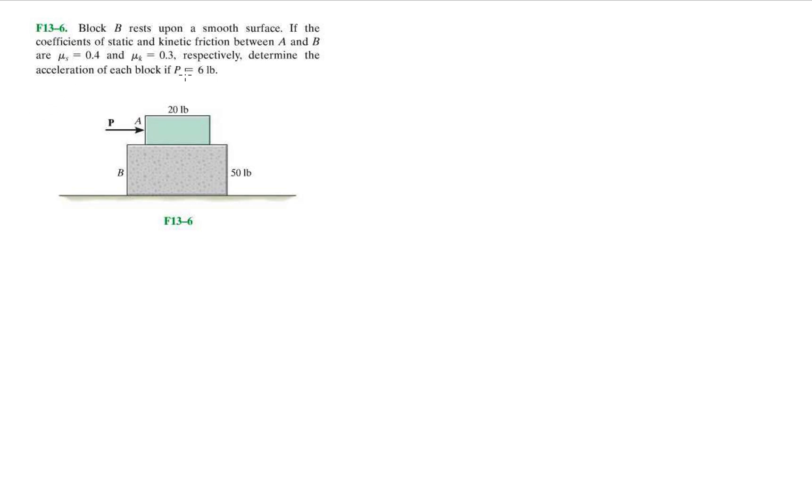Whenever we have this problem, determine the acceleration of each block if P equals 6 pounds. Right away, it's telling you that the big block is on a smooth surface. So down here, there's no friction at all.